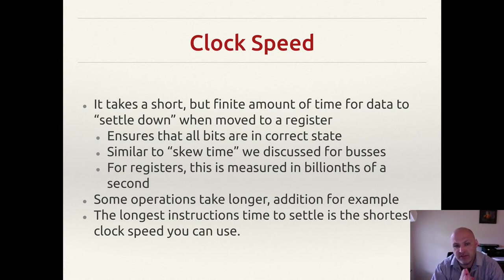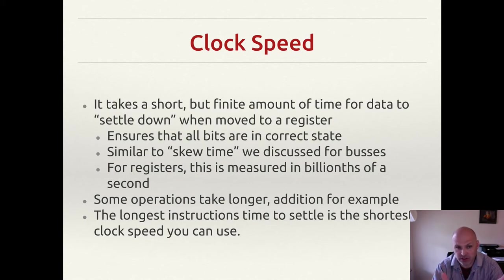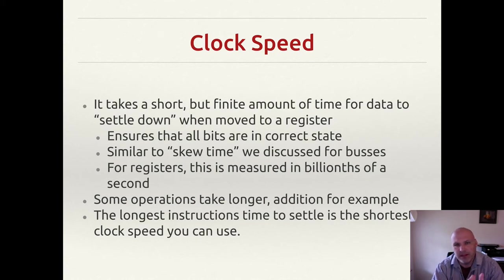The clock speed can't be faster than the longest time it takes something to move around the CPU — similar to bus skew time. Generally, you take your longest single-cycle instruction and use how long that takes to determine the clock speed. Of course, manufacturers bake in a little buffer time. If they say something takes five nanoseconds and it actually takes six, the system will be confused and likely crash.